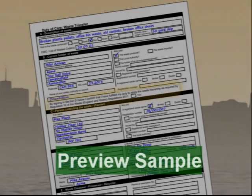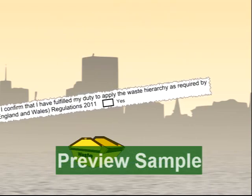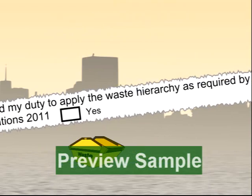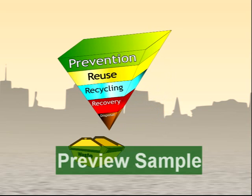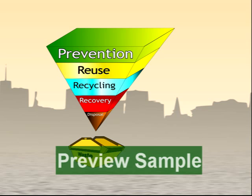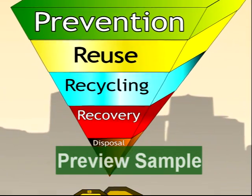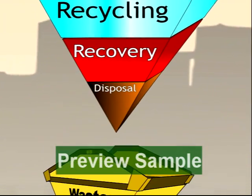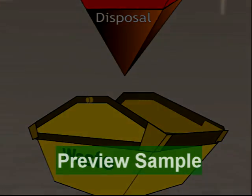There is a requirement to apply what's known as the waste hierarchy when transferring waste, and this must be confirmed on the waste transfer note. The waste hierarchy is a basic set of principles or options for reducing the environmental impact of waste and improving resource efficiency, beginning with the most favourable option — prevention, or avoiding the production of waste in the first place — through to the final disposal of the waste, which is the least favourable option.